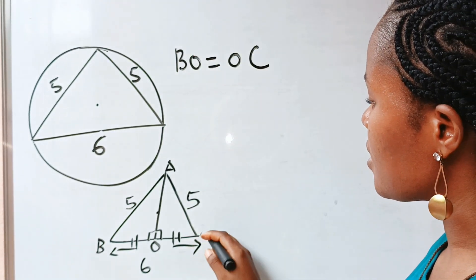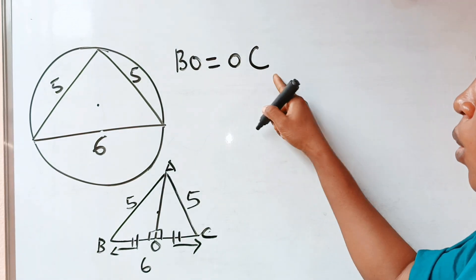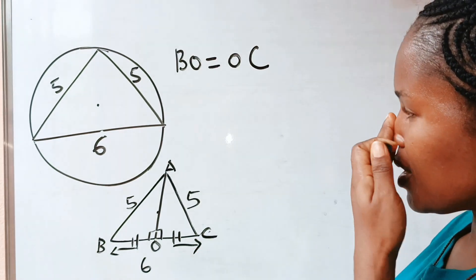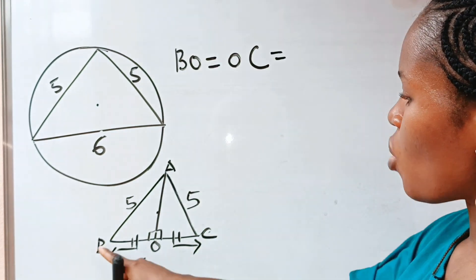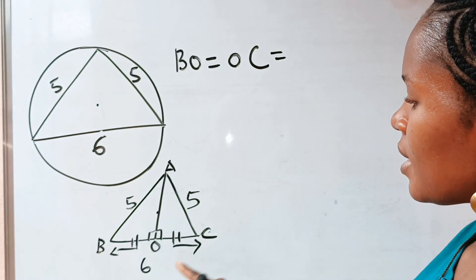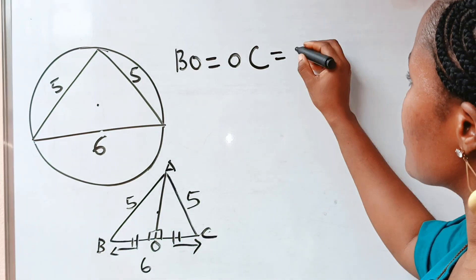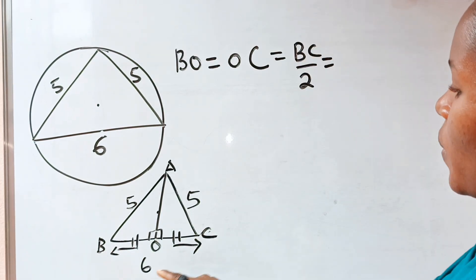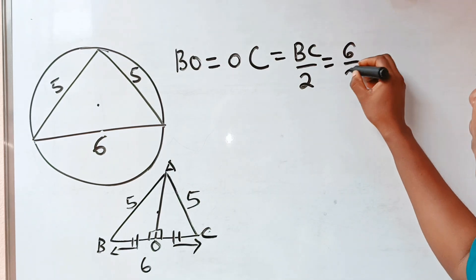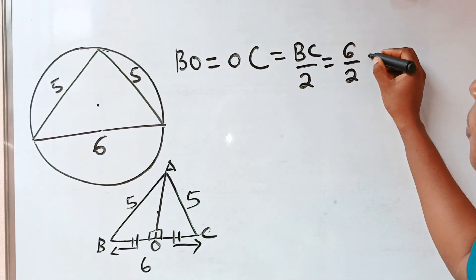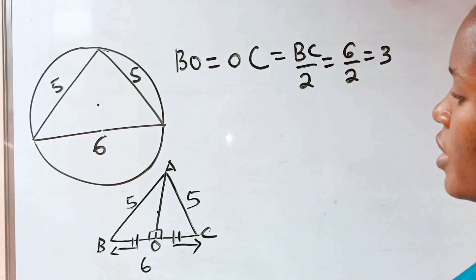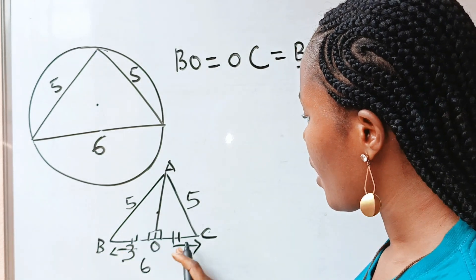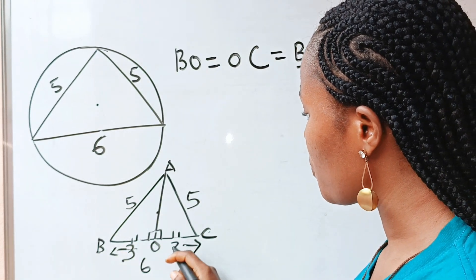Since BO equals OC, each equals BC divided by two. BC is six, so six divided by two gives us three. That means this segment is three and this segment is three as well.